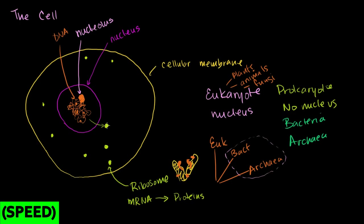The ribosome is where proteins get produced. If the ribosomes are just floating around as free ribosomes, those proteins will just float around in the fluid inside the cell that we call the cytosol. But what if we wanted to produce proteins that are supposed to end up in the membrane of the cell, or maybe outside of the cell itself? Cells produce things used by other cells and by the rest of the body. That's where we need ribosomes attached to the endoplasmic reticulum.